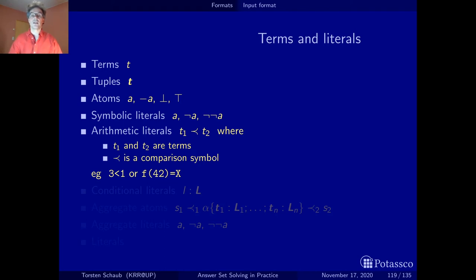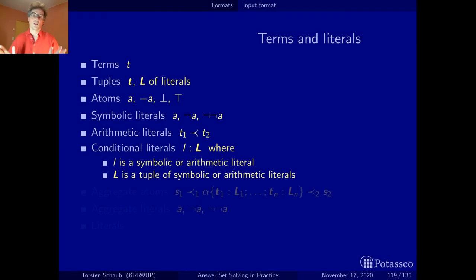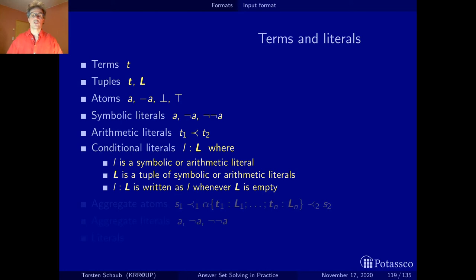Let's look at something more complicated and revisit conditional literals briefly. You've seen conditional literals already at several occasions, so that should be pretty straightforward. A conditional literal is a literal subject to a tuple of symbolic or arithmetic literals. The boldface L is a tuple that represents a conjunction of literals, and L itself can be symbolic or arithmetic, and the same for the guys in the conjunction or tuple. Here is an abbreviation: whenever this tuple here is empty, you also drop the colon and you just write the whole thing as L. Conditional literals degenerate to ordinary literals whenever there are no conditions.